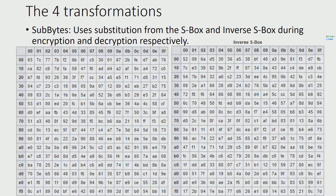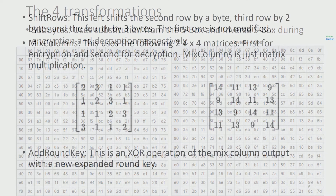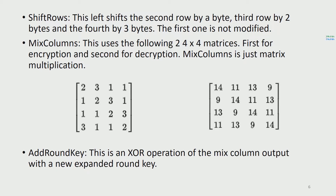The four transformations are as follows. SubBytes uses substitution from the S-box and inverse S-box during encryption and decryption respectively. ShiftRows shifts the second row by 1 byte, the third row by 2 bytes, and the fourth by 3 bytes; the first row is not modified. MixColumns uses two 4x4 matrices — the first for encryption and the second for decryption — and is matrix multiplication performed over the Galois field. AddRoundKey is an XOR operation of the MixColumns output with a new expanded round key.